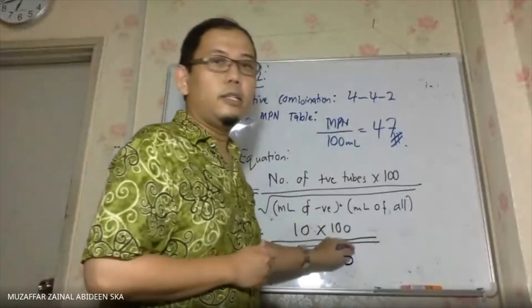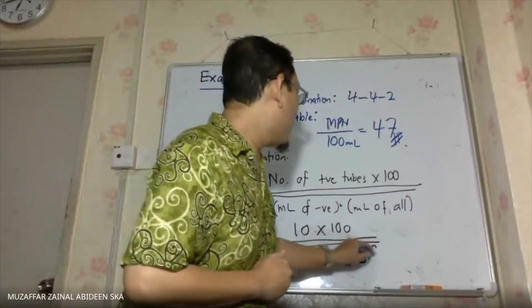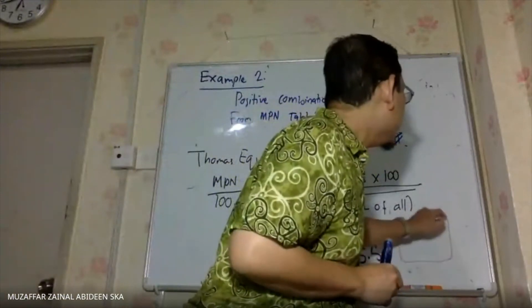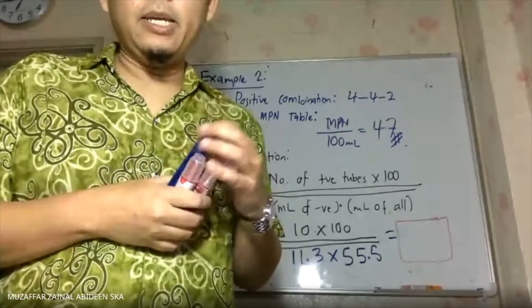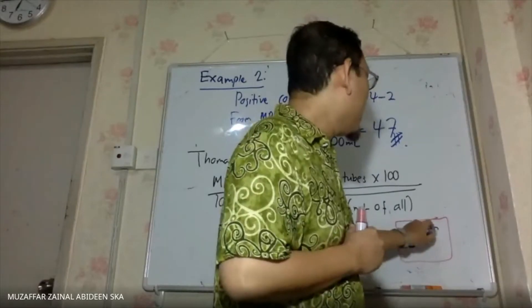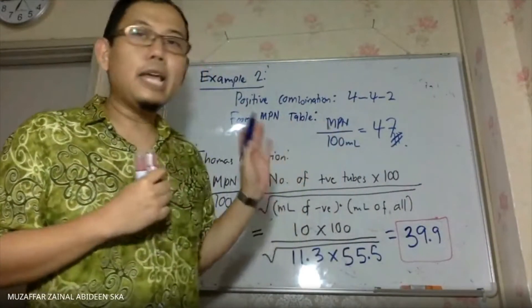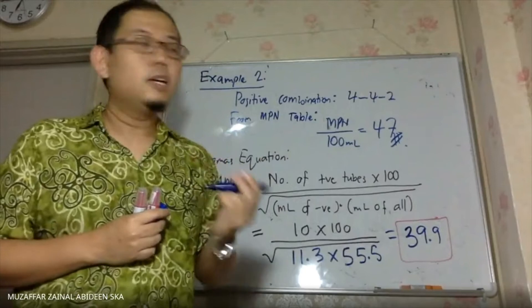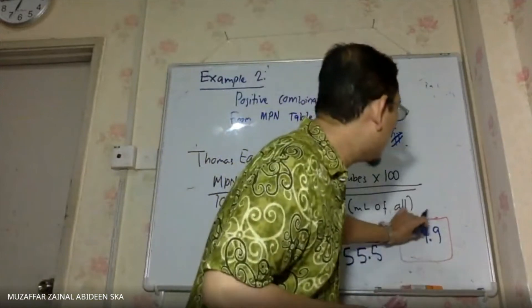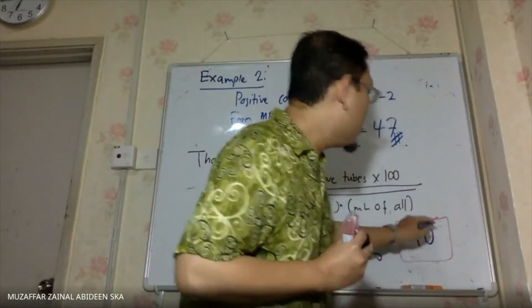Please try to solve that and tell me the answer. Student: I got 39.93. Doctor: 39.9 — but remember it has to be written to two significant figures. 39.9 is three significant figures, so we do not want that. You should give your answer as 40. We have no choice but to put 40.